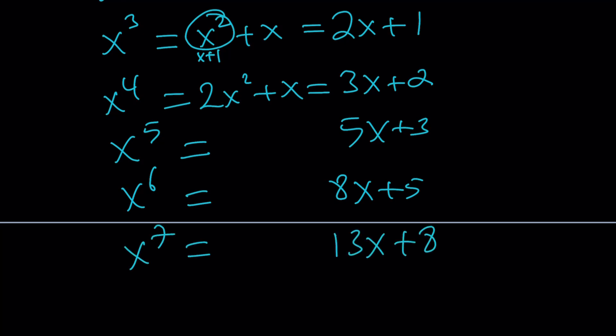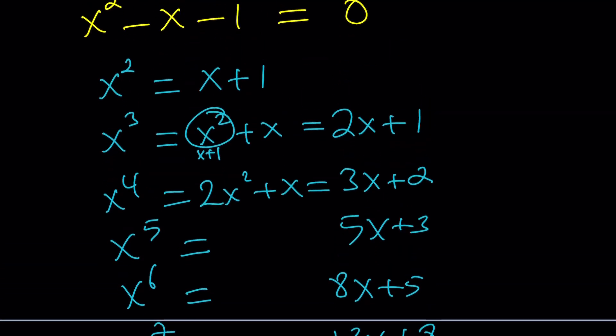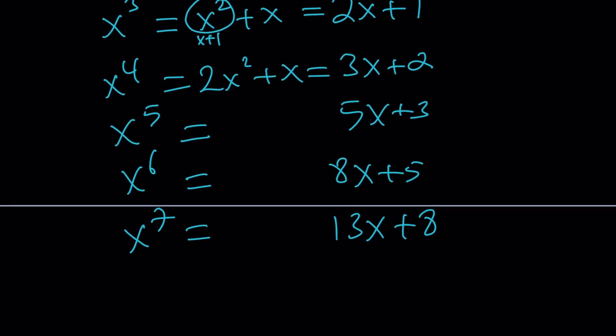Notice how the coefficients are changing. Going diagonally: 1, 1, 2, 2, 3, 3, 5, 5, 8, 13. However you read them, those numbers are the Fibonacci numbers — and it's not a coincidence.